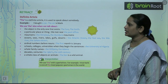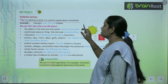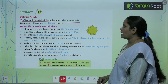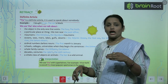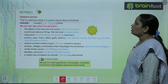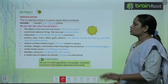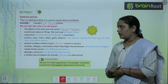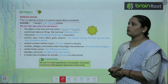Now, Definite Articles. As we have already learned about indefinite articles, now we are going to learn about the definite article. 'The' is a definite article. It is used to speak about something specific. Example: 'I bought a car. The car is black.' We use 'a car' when mentioning it for the first time, and then 'the car' when referring to the same car again. We also use 'the' when the object is the only one that exists — like the sun, the earth.